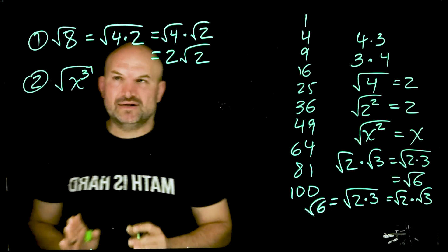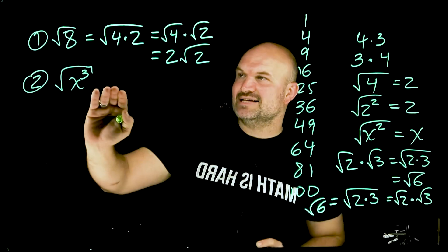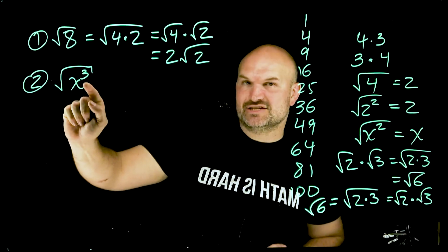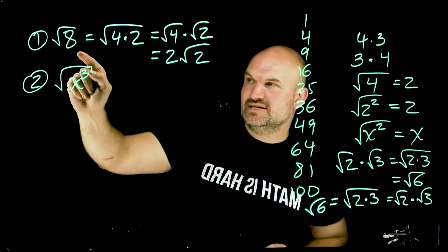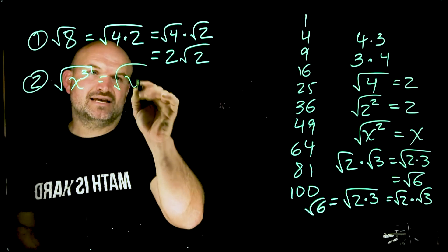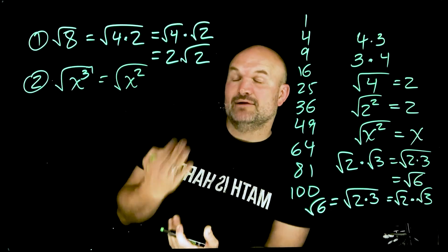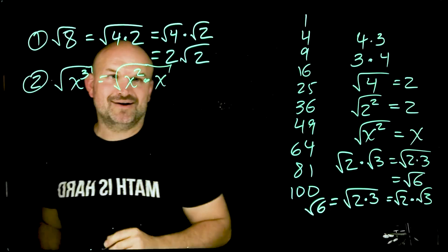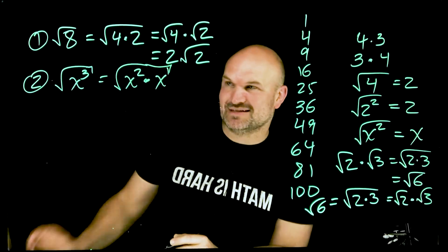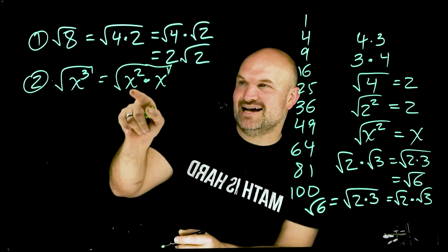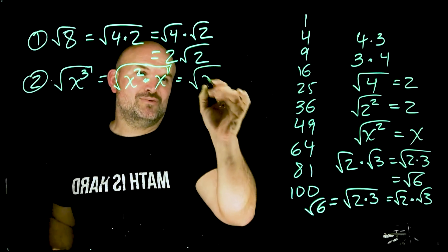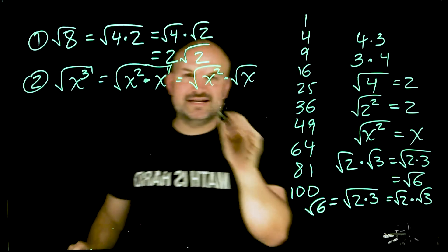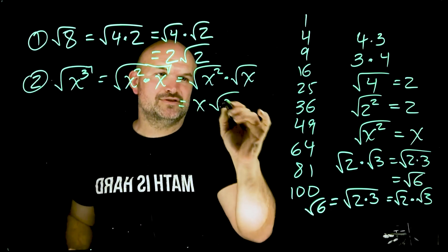Now let's bring in some variables. For the square root of x cubed, I'm going to rewrite x cubed as x squared times x to the first, because 2 plus 1 equals 3. So I can rewrite this as the square root of x squared times the square root of x. The square root of x squared is just x, so the square root of x cubed simplifies to x times the square root of x.